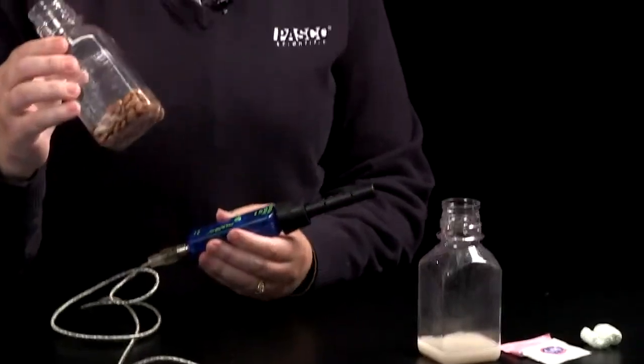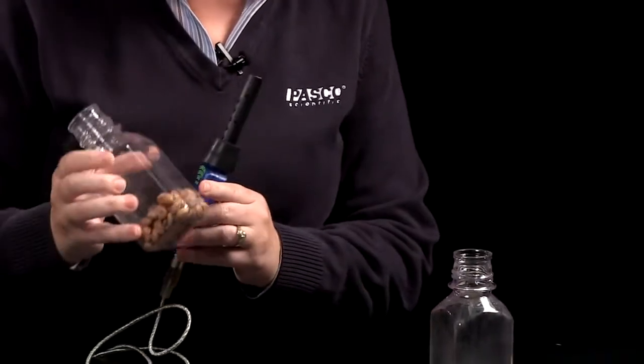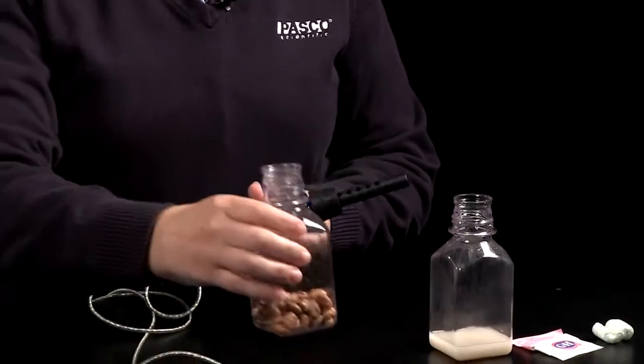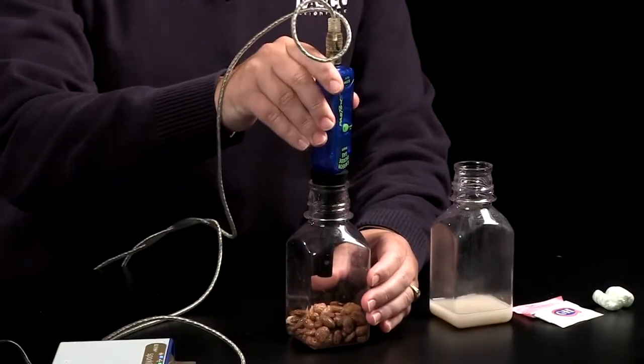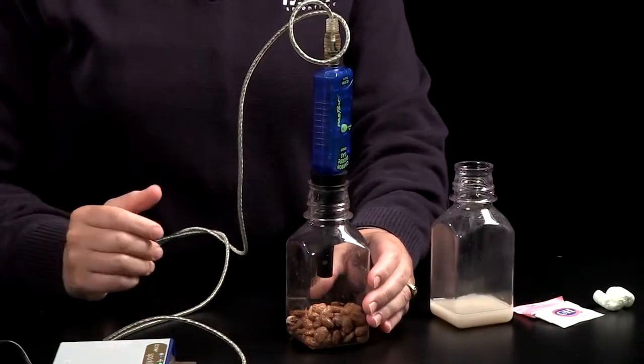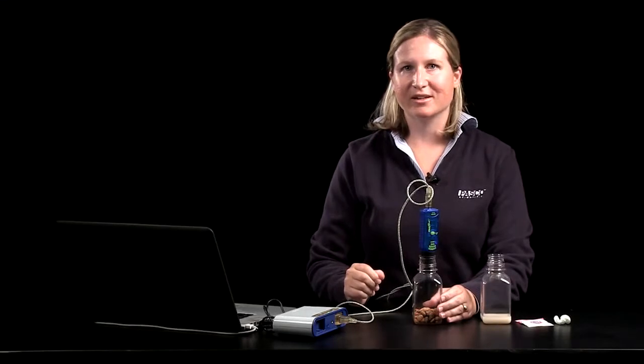I filled the sample bottle up to the 50 milliliter mark on the side of the bottle with some germinating seeds that have been soaked in water for about 24 hours. You can leave them for one or two nights before your students use them, and just make sure that germination is evident in the seeds. You can plug the sample bottle with the carbon dioxide gas sensor and then hit play to start collecting your data.